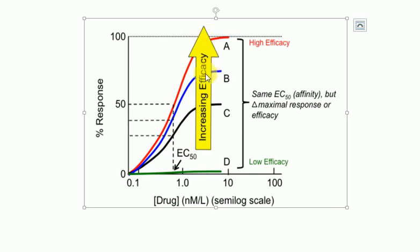Drug B is having its maximum effect at a certain point, and beyond this point when the dose is increased there is no increase in the response — the graph is smooth and flat. The same is the case with drug C: at a certain point it is having its maximum effect, and beyond this point with the increase in concentration of the drug, there is no increase in response — the graph is flattened.